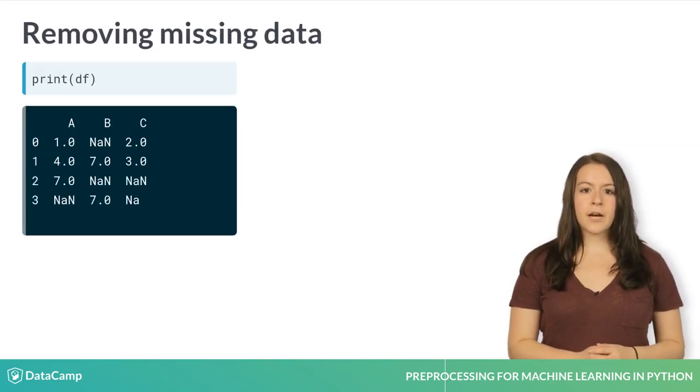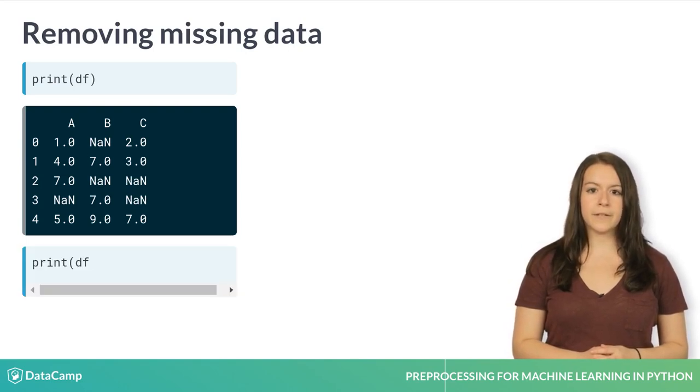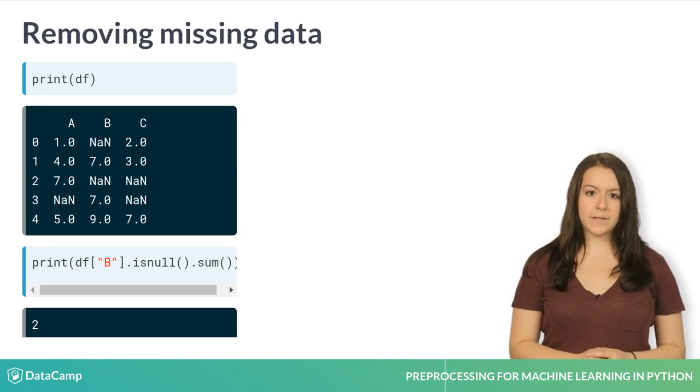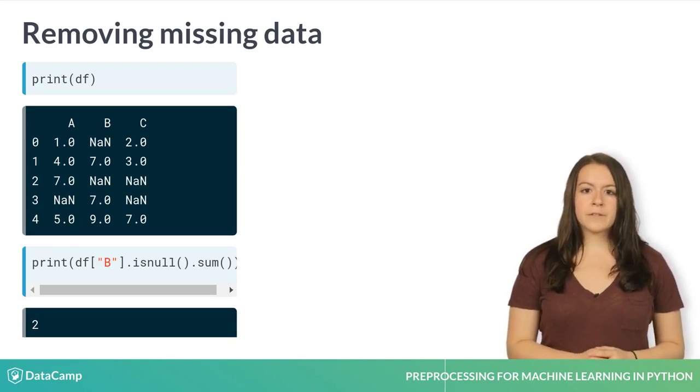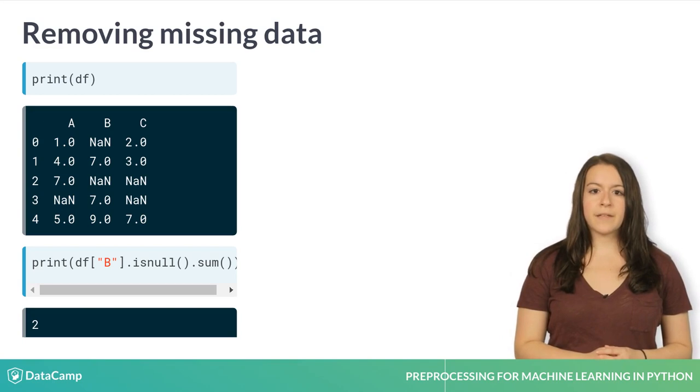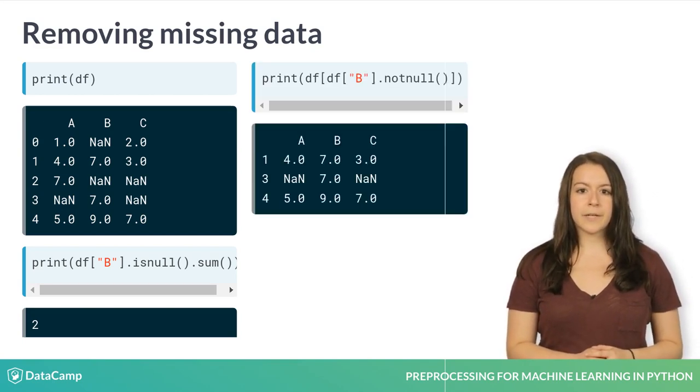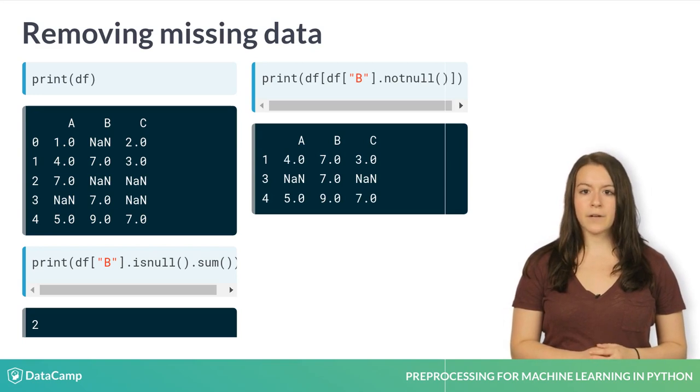First, let's take a look at how many null values we have in column B using isnull to get null values and then using sum to output a count. So we have two missing values. To filter those out, we can simply use the notnull method on column B as a Boolean index. This will result in a data frame where all rows have a non-null value for column B.